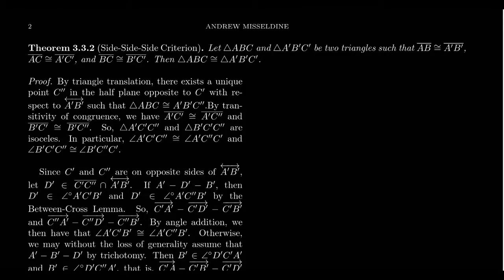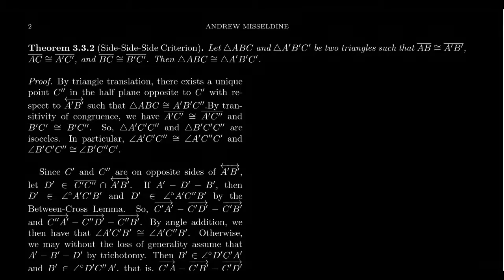In the previous video, we had proven that the side-angle-side triangle congruence criterion, which we take as an axiom of congruence geometry, implies the angle-side-angle congruence criterion. In fact, we implied that the two are logically equivalent to each other. You could take either one equipped with the five other axioms of congruence and develop the exact same congruence theory.